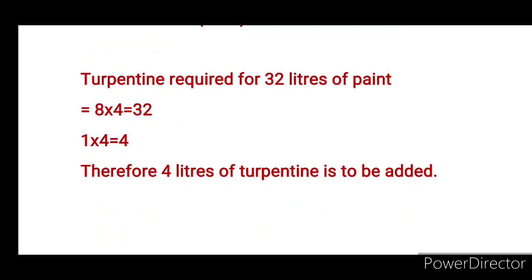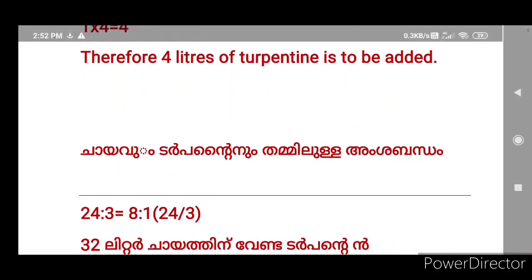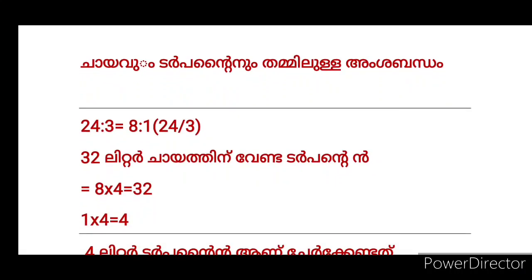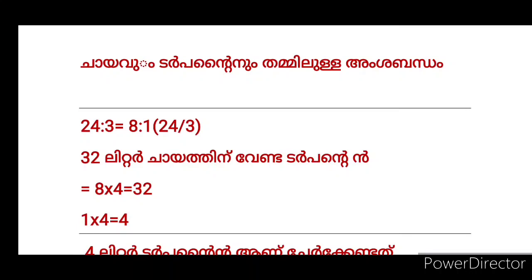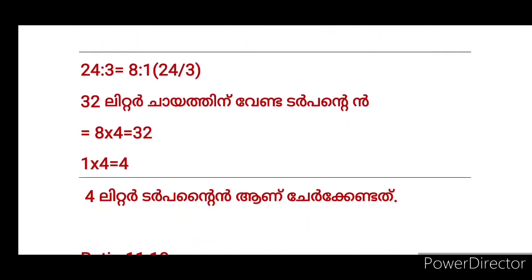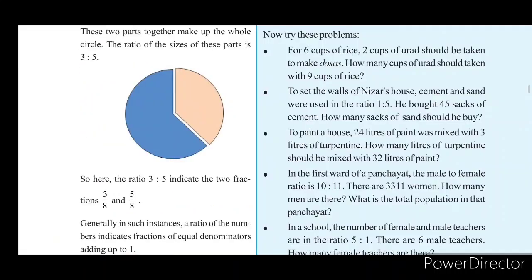Therefore, 4 liters of turpentine needs to be added. Chai in turpentine is 24 to 3, which is 8 to 1. 22 liters: chai in turpentine is 3 to 4. 4 liters of turpentine is needed.